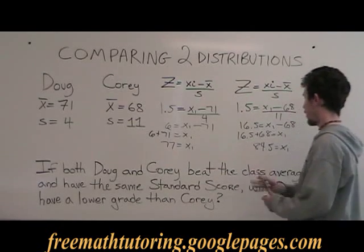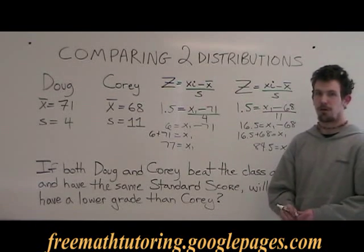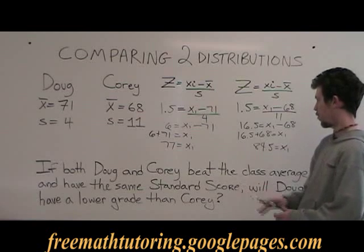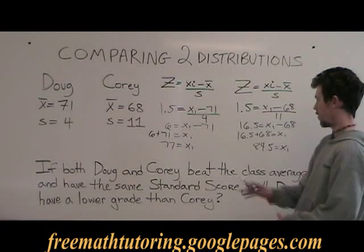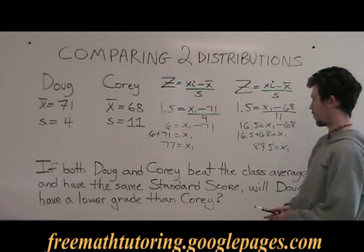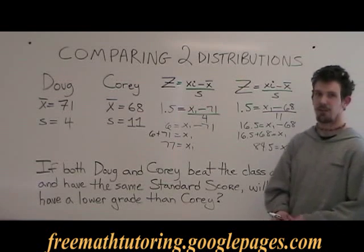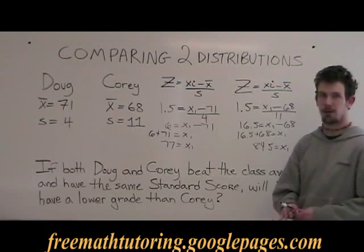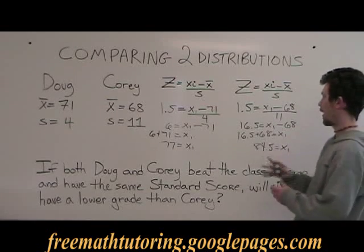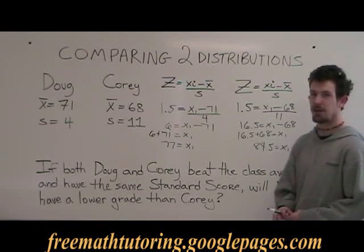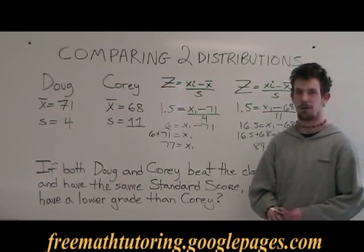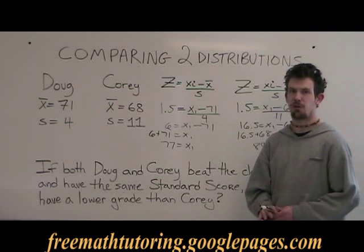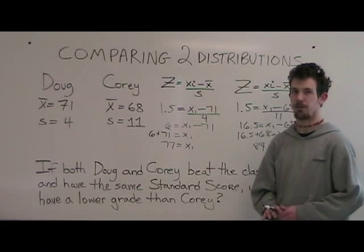Now that you know the two marks, you know that the answer to the question is: Doug does have a lower mark than Corey while having the same z-score. This is how you compare two distributions with two unknowns.